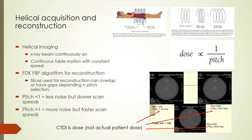Helical imaging is a continuous acquisition mode where the beam is continuously on as it rotates and the table moves at constant speed. Images are reconstructed using the FDK filtered back projection algorithm. For pitch less than one, slices used for reconstruction overlap, leading to less noise. For pitch greater than one, there are gaps between slices, leading to a noisier image. Pitch less than one results in slower scans and higher dose, while pitch greater than one results in faster scans and lower dose.